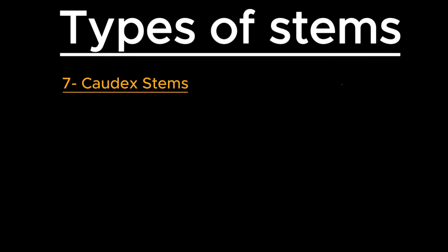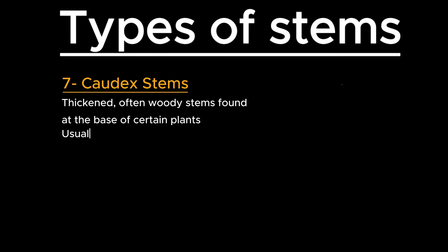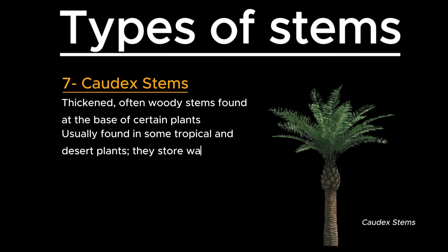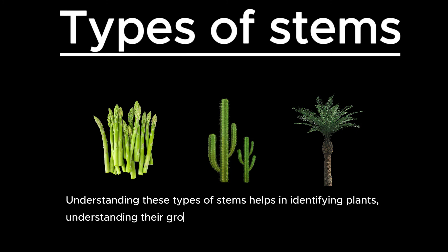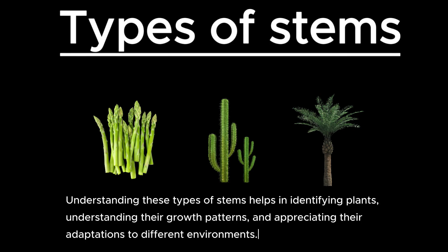The last type is caudex stems. They are thickened, often woody stems found at the base of certain plants, usually found in some tropical and desert plants, where they store water and nutrients. Understanding these types of stems helps in identifying plants, understanding their growth patterns, and appreciating their adaptations to different environments.